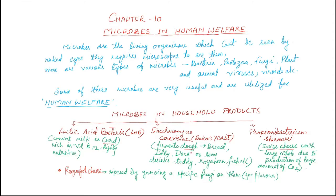These yeasts are responsible for fermenting the dough, which can be used for making bread, idli, dosa, and other food products, as well as drinks like toddy and for fermentation of soya bean and fish. Cheese is also made with the help of bacteria — for example, Propionibacterium sharmanii helps in making Swiss cheese.